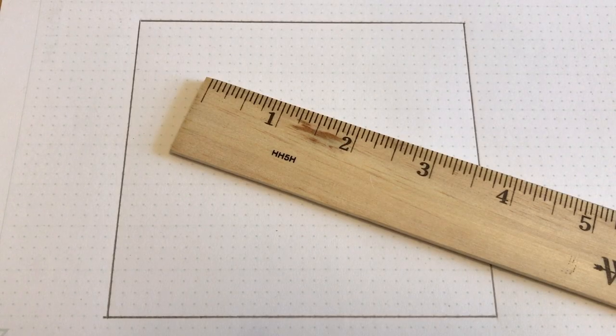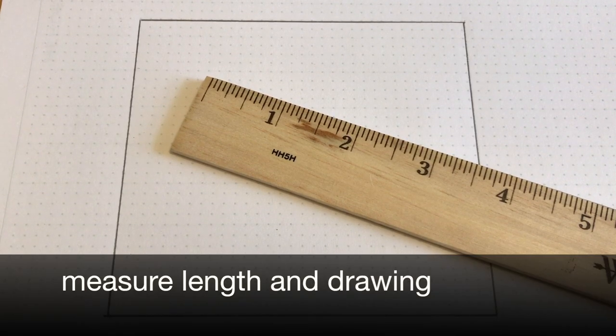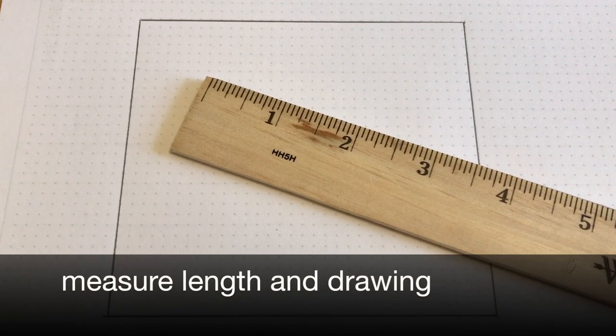Now that we understand how the measurement markings work, let's talk a little bit more about how to use a ruler. A ruler can be used to measure the length of an object or for drawing straight lines.